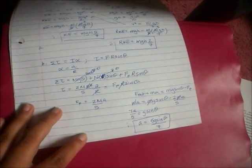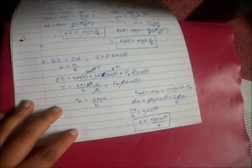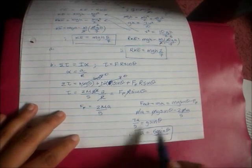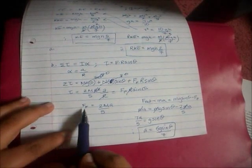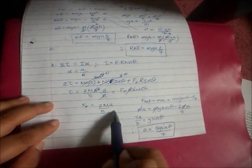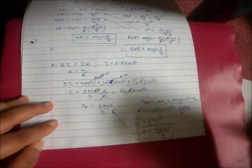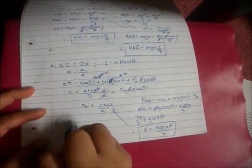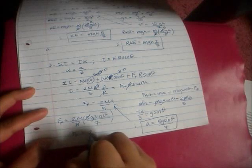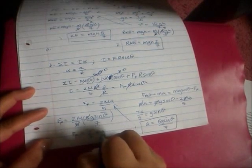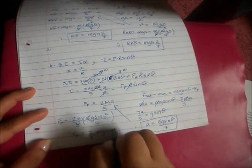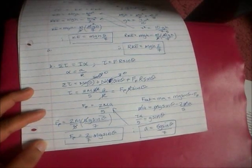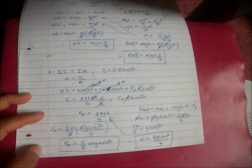That was the first part of B — the linear acceleration is 5g sin θ over 7. For the second part, we substitute this acceleration back into the friction expression: force of friction equals 2ma/5 equals 2/7 Mg sin θ. That is our answer for the magnitude of friction.